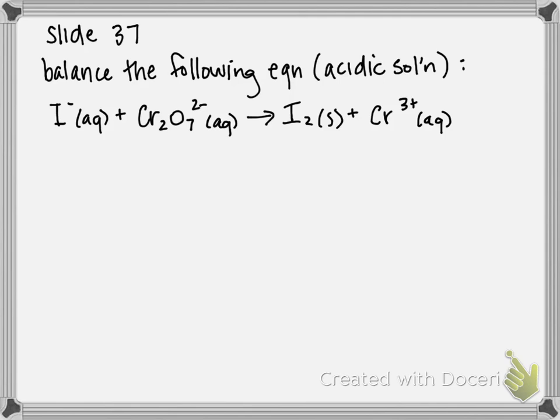For iodine minus, it tells you the charge of the ion, so it's minus one. For the dichromate ion, it's a polyatomic ion. Oxygen is minus two.